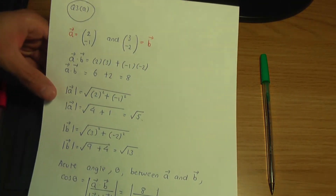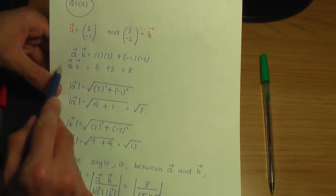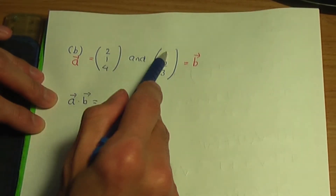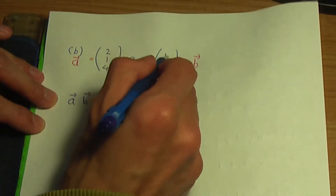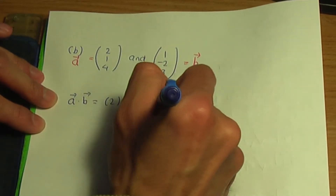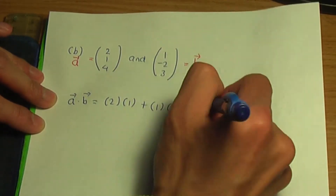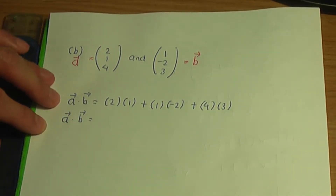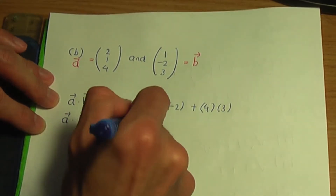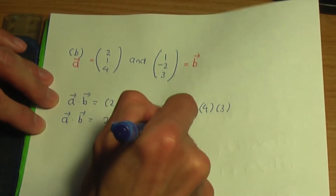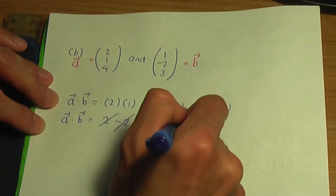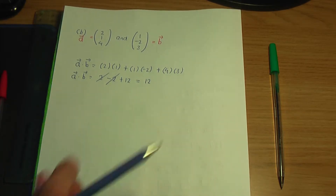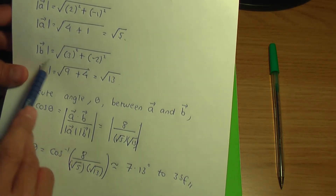Let's first calculate A dot B — the dot product. Multiply corresponding components and add: two times one, plus one times minus two, plus four times three. That gives two minus two plus twelve. Two minus two cancels, so A dot B equals twelve. The scalar product is twelve.